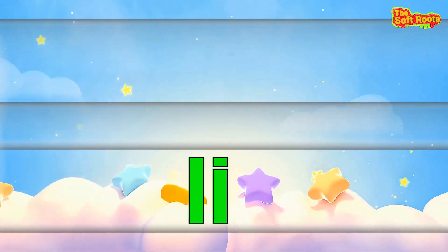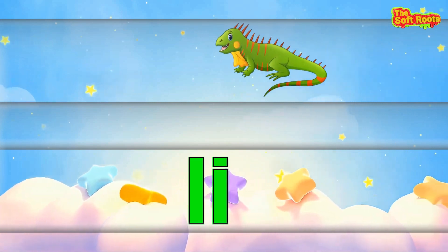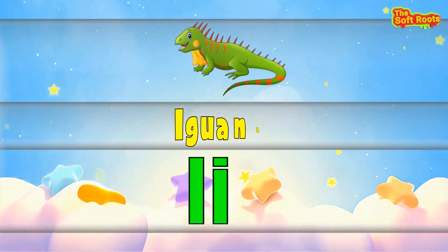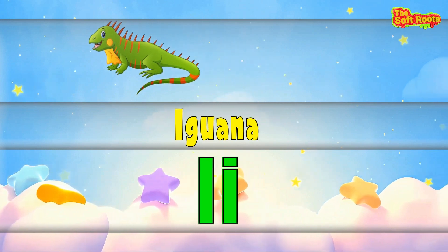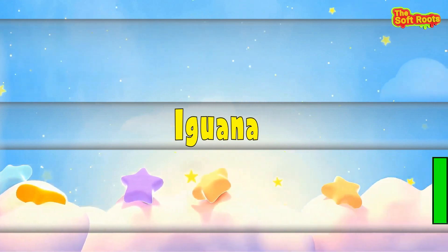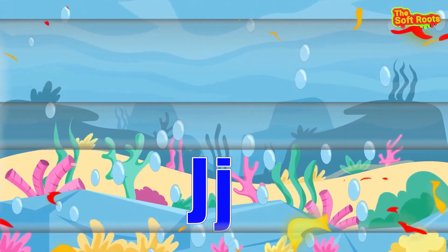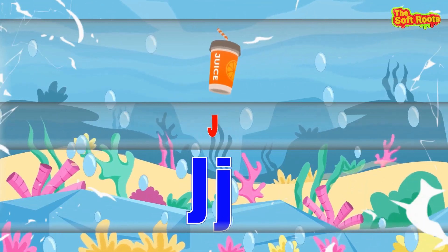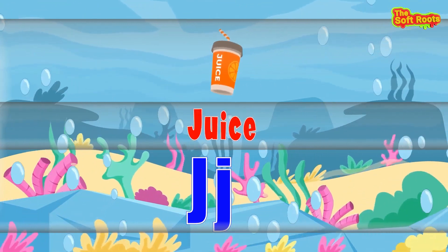I is for I-I-Iguana, I-I-Iguana. J is for J-J-Juice, J-J-Juice.